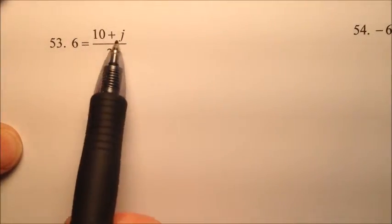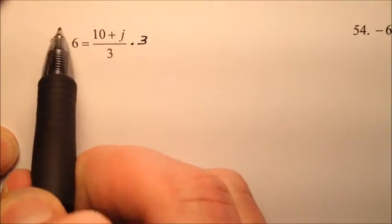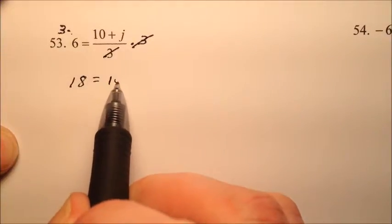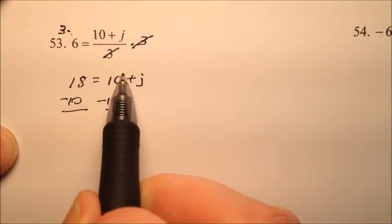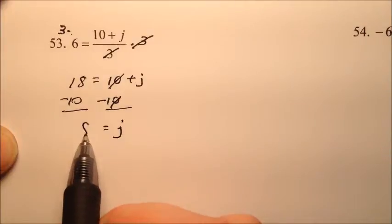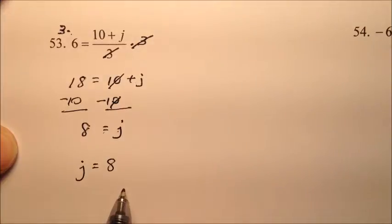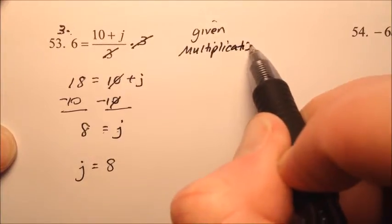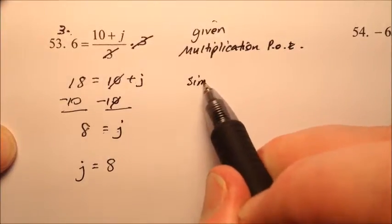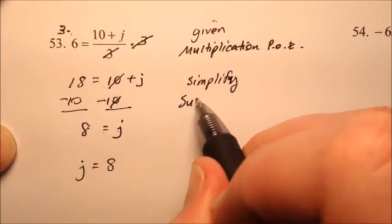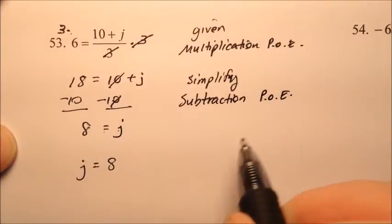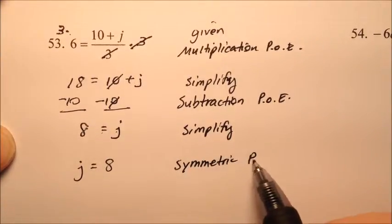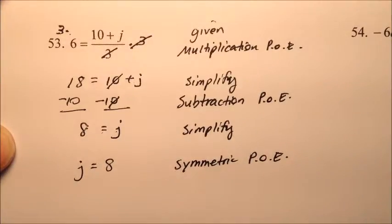Number 53 says 6 equals the quantity 10 plus j all over 3. Similar to the previous example, multiply both sides by 3 to get rid of the fraction. The 3s cancel, giving 3 times 6 equals 18, so 18 equals 10 plus j. Subtract 10 from both sides: 18 minus 10 is 8. Using the symmetric property, j equals 8. Steps: given, multiplication POE, simplify, subtraction POE, simplify, symmetric property. Solution: j equals 8.